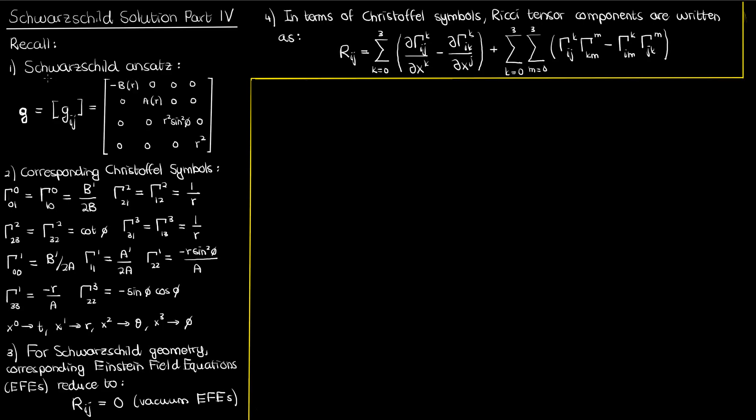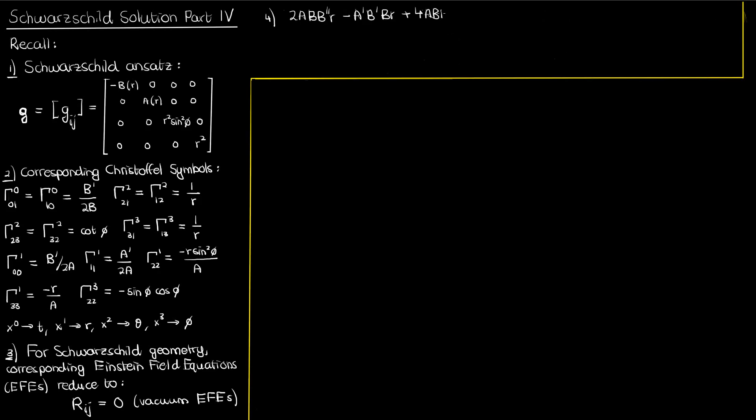We've got the ansatz, the educated guess for the Schwarzschild metric under 1. We've got our corresponding non-zero Christoffel symbols under 2. We've got the vacuum Einstein field equations under 3. And under 4, I'm actually going to erase the formula for the Ricci tensor components and instead put down equations 0 to 2 that we derived in the last video.